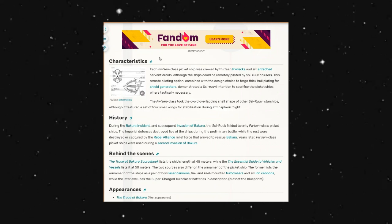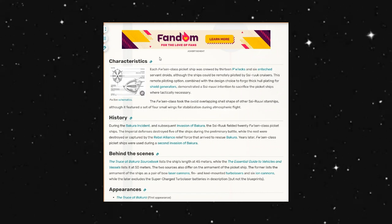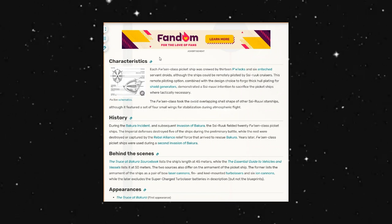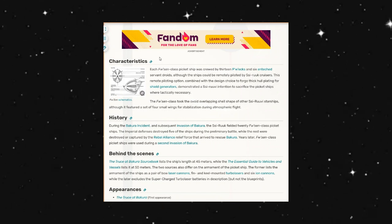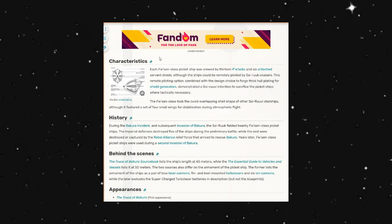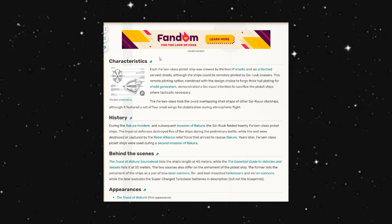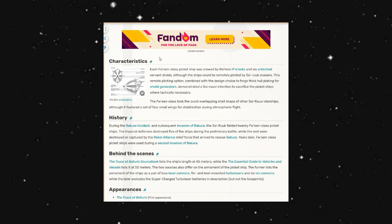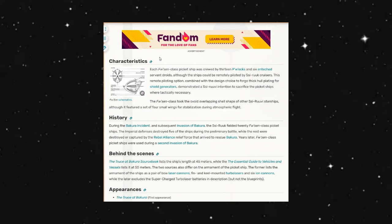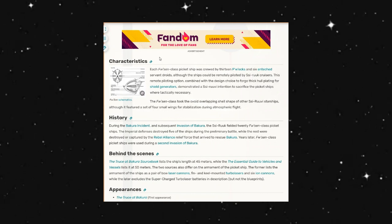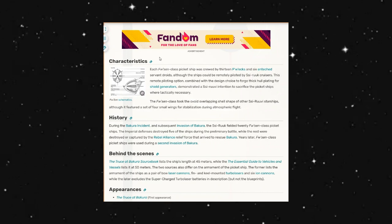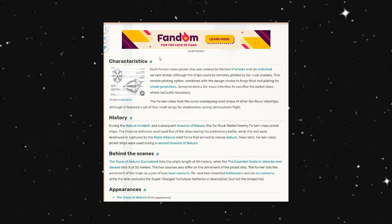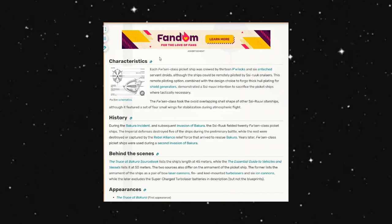The remotely piloting option combined with the design choice to forego thick hull plating for shield generators demonstrated an intention to sacrifice the picket ships where they were tactically necessary. The class took the overlapping shield shape of other starships of its type, although it featured a set of small wings for stabilization during atmospheric flight.